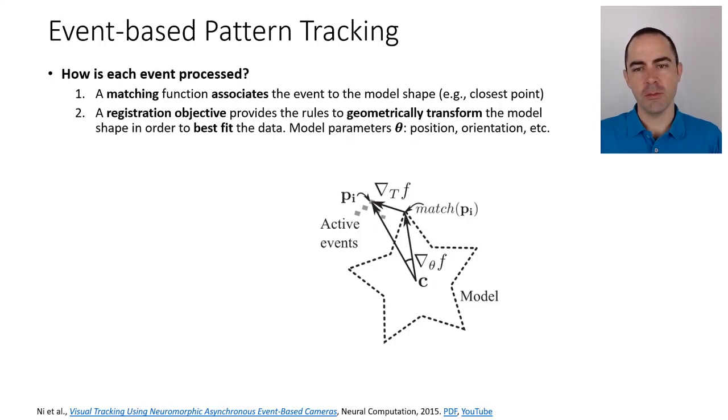The second step is, now that we know the event belongs to the object, how can we use the information in the event to update the model parameters—its location, orientation, etc.? This is the registration objective.